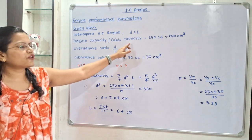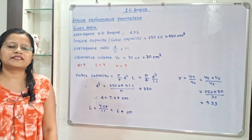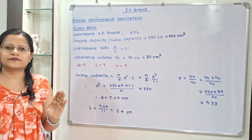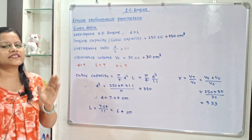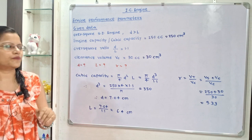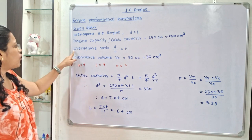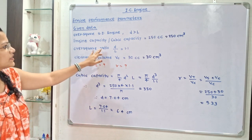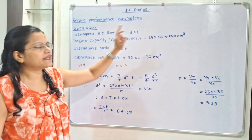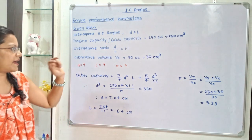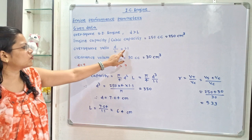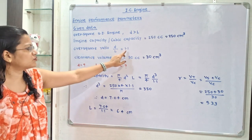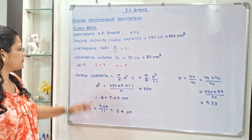Engine capacity or cubic capacity is given as 250 cc, where cc means centimeter cube. The over-square ratio, which is D divided by L, is equal to 1.1, as mentioned in the question.